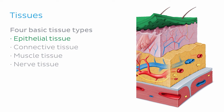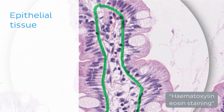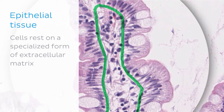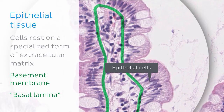Now that we've covered the four basic tissue types of the human body, let's focus on the one we're interested in — epithelial tissue. Epithelial tissue is a tissue made up of cells that cover surfaces both inside and outside of the body, and because of this it's known as a covering tissue. Epithelial cells rest on a specialised form of extracellular matrix known as the basement membrane or basal lamina. We can see the basement membrane highlighted in green in our image, situated between the epithelial cells whose basal surfaces are attached to it and the underlying connective tissue.